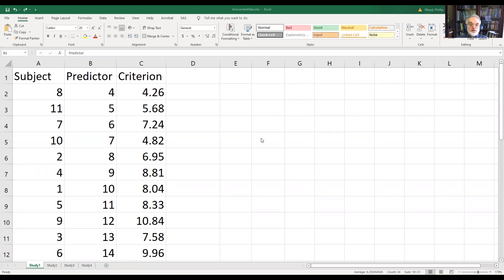So here we have our data. I've taken the liberty of sorting the data on the predictor value just to make things a little bit easier for us to talk about. What we see here is an ID, values on a predictor, the X variable, and values on the criterion, the Y variable.